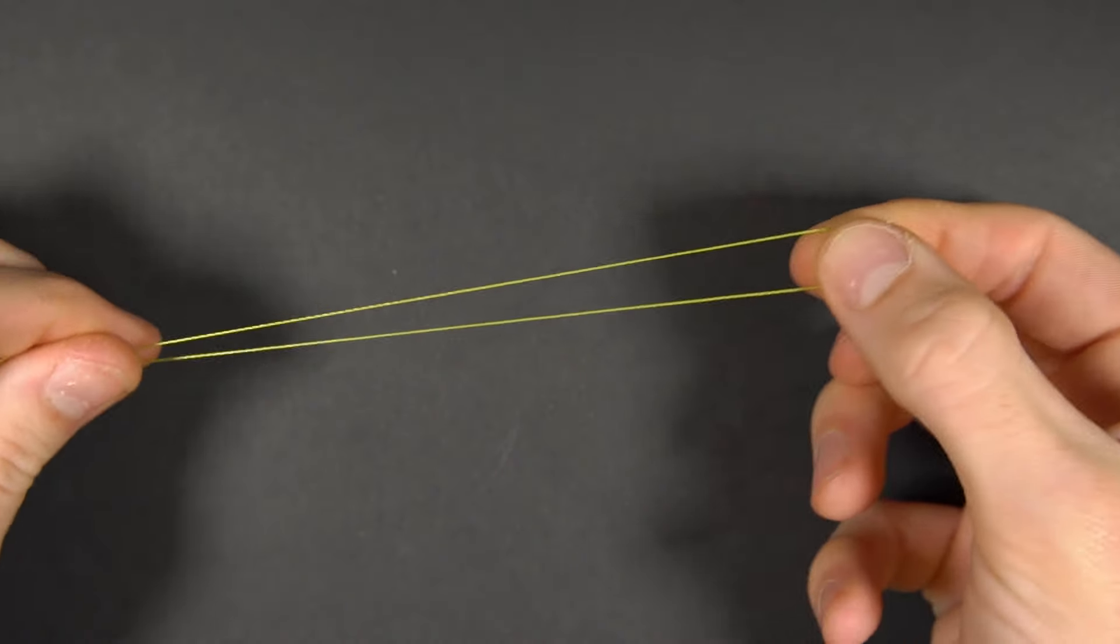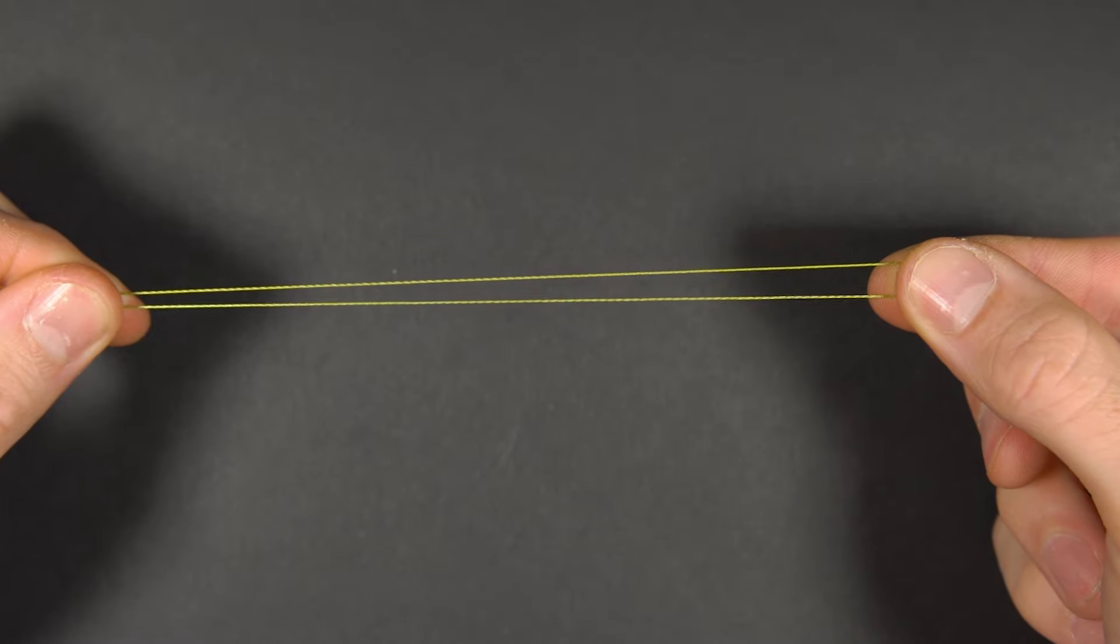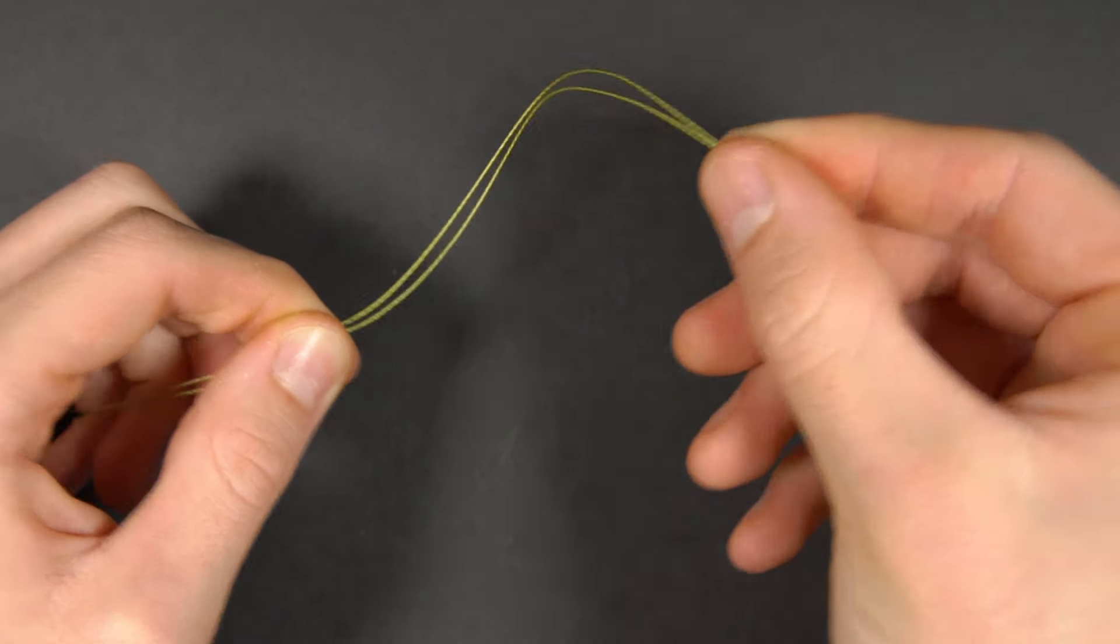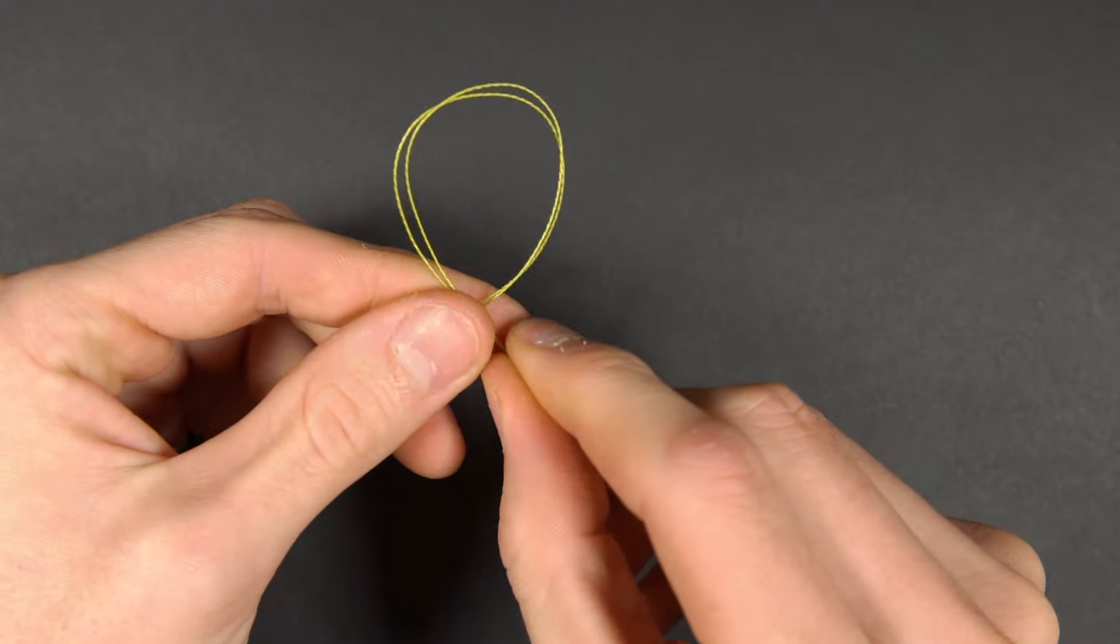Step one, fold a section of your line back on itself to create a loop. Then bring this loop section back passing it over itself.